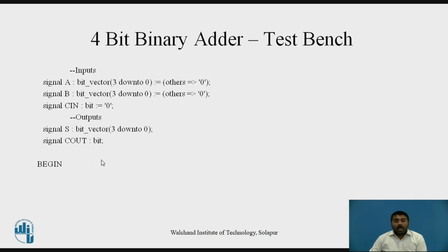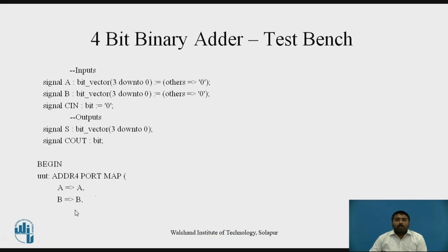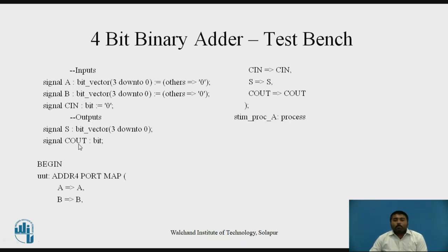Once you are done, you start the architecture begin — here your actual architecture begins. In the architecture, you write the component instantiation as in the VHDL code design. UOT is the component instantiation name. Then you write the component name ADDR and port map the inputs and outputs: A is mapped with A, B is mapped with B, C in is mapped with C in, S is mapped with S, and C out is mapped with C out. These signals are mapped with the signals declared in the component. Next, we have to write the processes — the stimulus process.